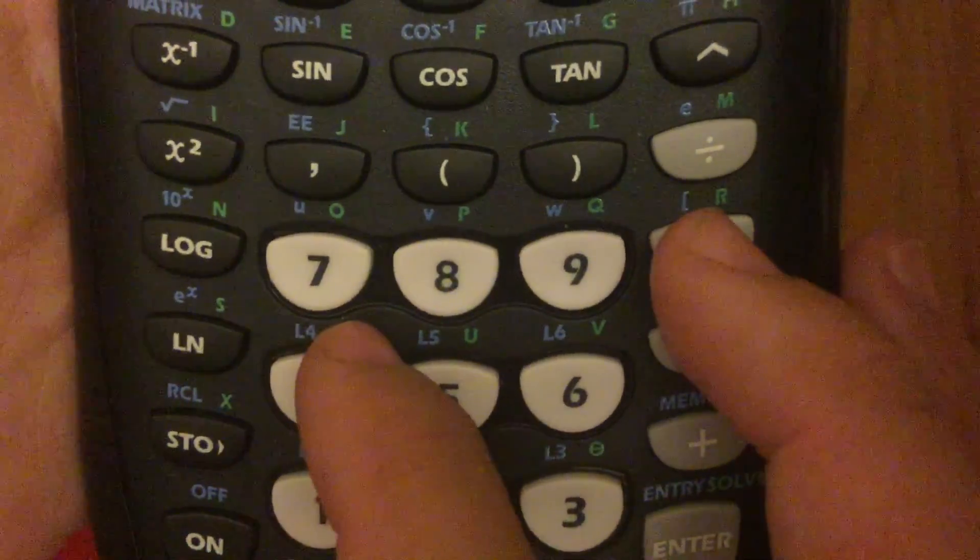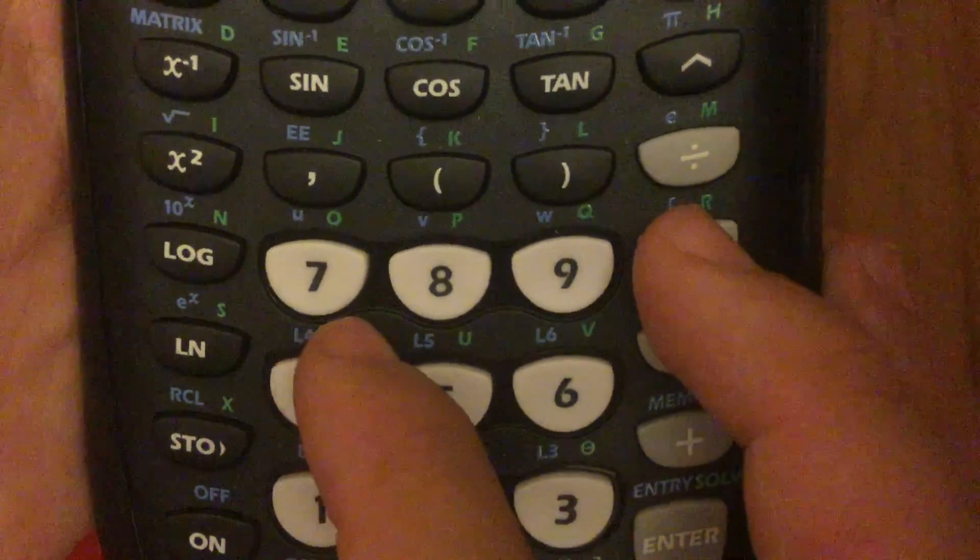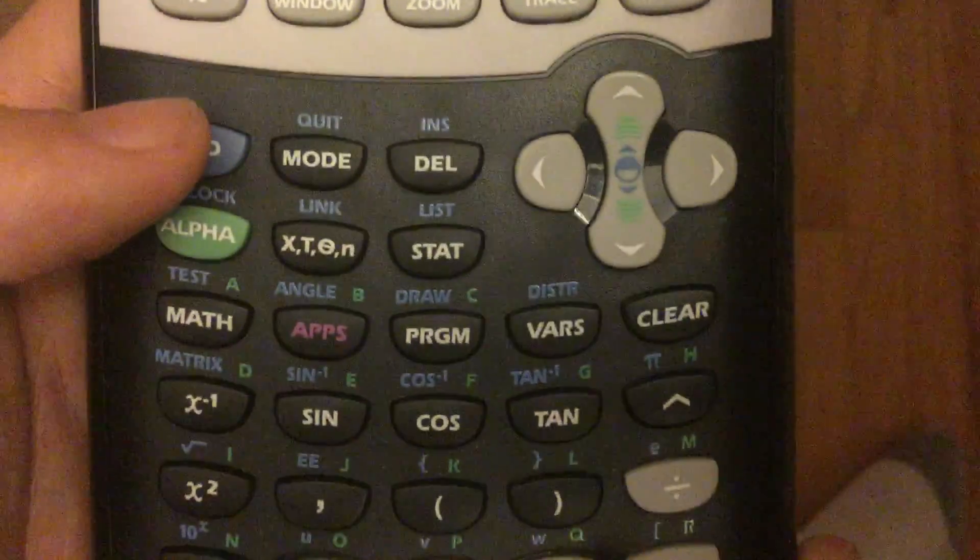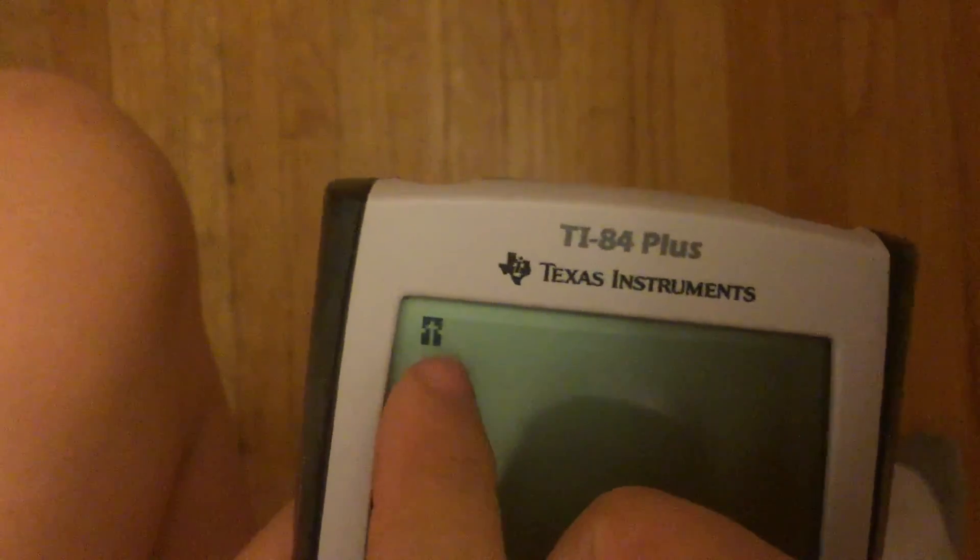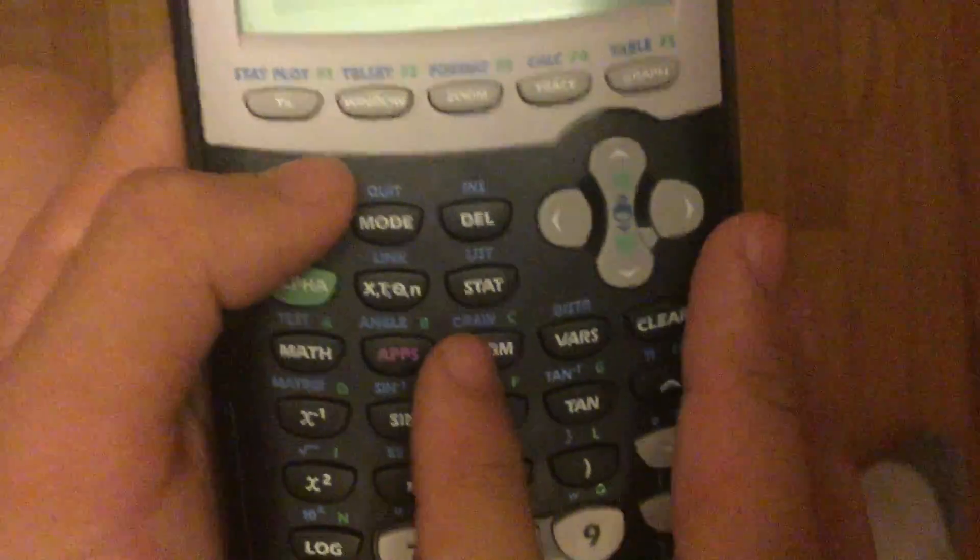There are blue and green things above each key. Now, you can use those by pressing second. And it will register second with that up arrow. And then you can press anything.